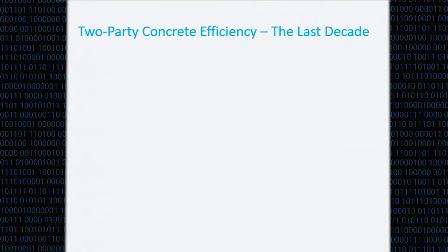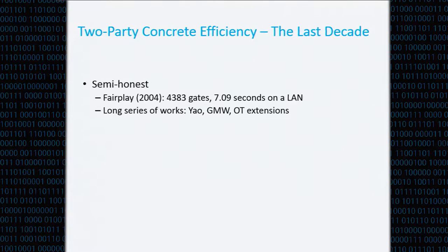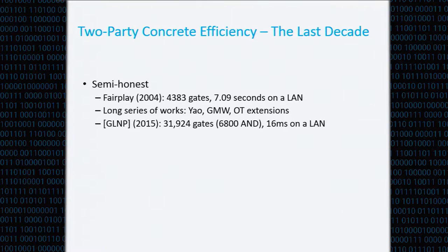I'll give a very brief and partial history of secure computation. The first implementation was Fairplay, just over a decade ago. They computed less than 5,000 gates in more than 7 seconds on a fast network. Since then there have been tons of improvements — a long series of works on Yao, GMW, OT extensions, and work from last year by Gurion et al. measured computation of an AES circuit in just 16 milliseconds on a local area network.